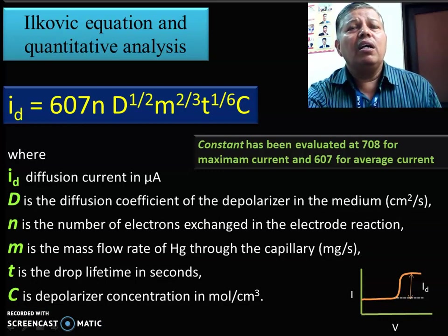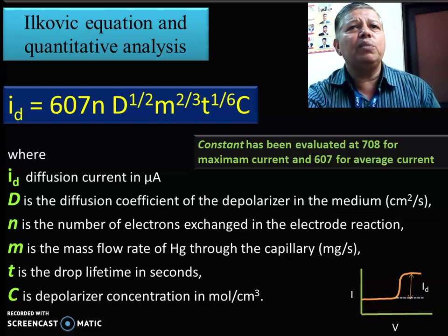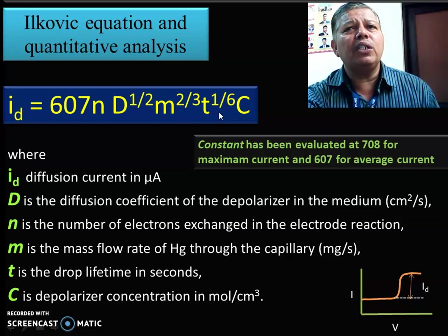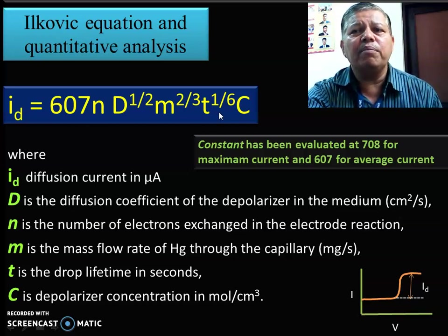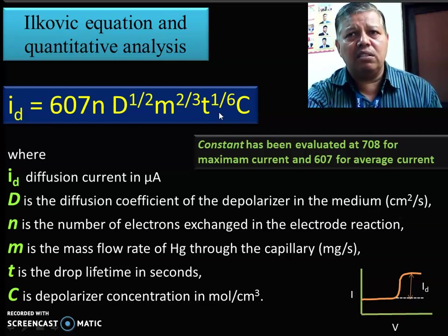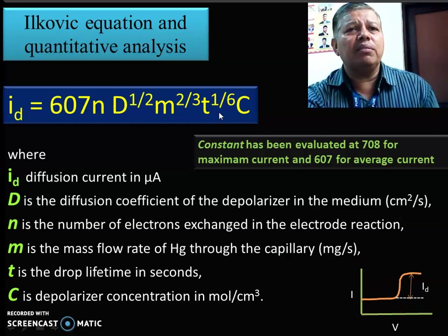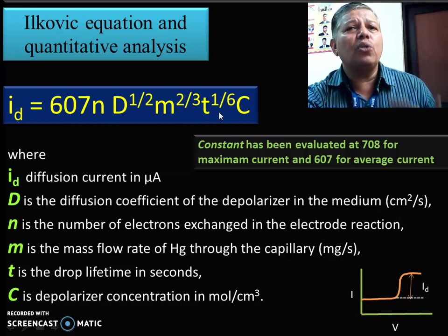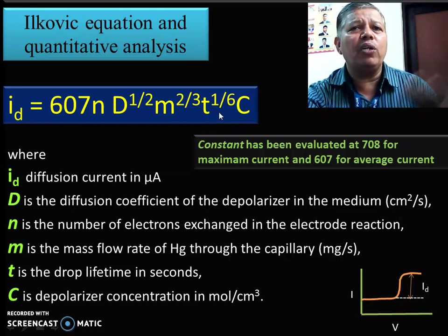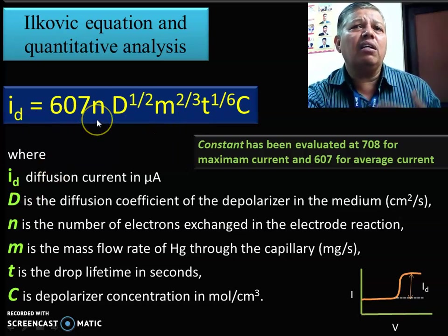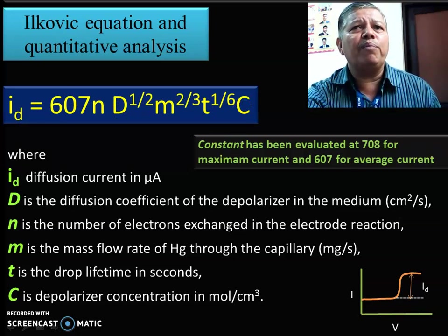The most important equation is the Ilkovic equation: ID = 607 × n × D^(1/2) × M^(2/3) × t^(1/6) × C. Here ID is the diffusion current, D is the diffusion coefficient of the depolarizer in the medium, n is the number of electrons exchanged in the electrode reaction, M is the mass flow rate of mercury through the capillary in milligrams per second, t is the drop lifetime in seconds, and C is the concentration of the solution. From this equation, if we measure ID, we can calculate any one of the variables n, D, M, t, or C.